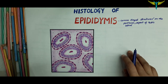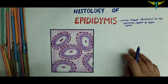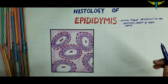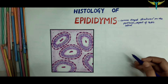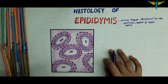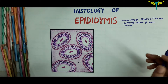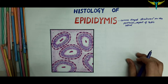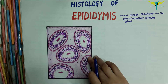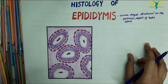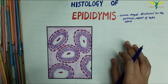The head is formed by highly convoluted continuations of the efferent ductules, which are lined by ciliated columnar epithelium. At the lower end of the head of the epididymis, these tubules join to form a single tube called the duct of the epididymis.